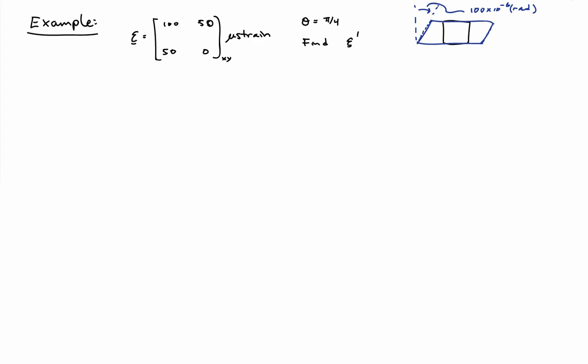We want to find what the strain components look like in a coordinate frame rotated 45 degrees with respect to the XY coordinate frame. So I have X and Y, and X prime, Y prime oriented at 45 degrees. The state of strain shows an elongational strain in the X direction of 100 microstrain, and a positive tensorial shear strain of 50 microstrain — which is 100 engineering microstrain — corresponding to an angle of 100 times 10 to the minus 6 radians.